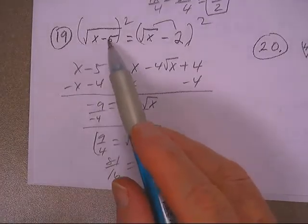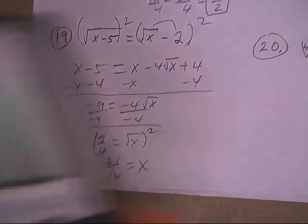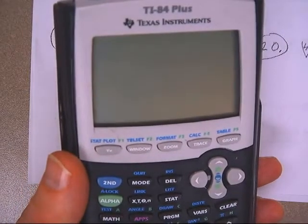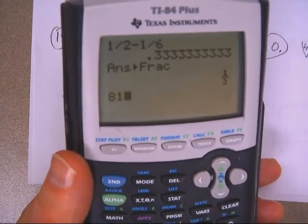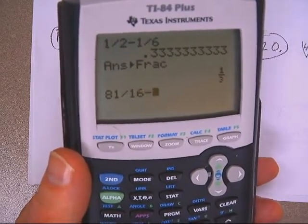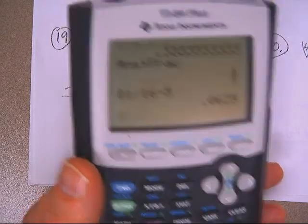Well, if you do 81 sixteenths minus 5, let's try it, 81 sixteenths minus 5. I get that,